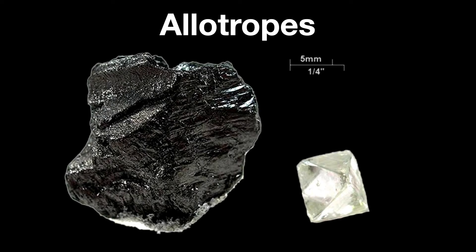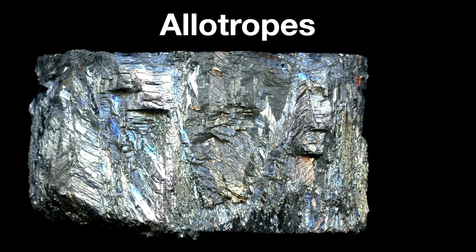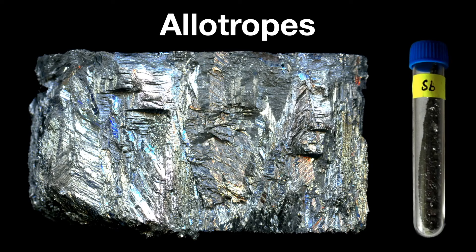Antimony has four allotropes. Allotropes are two or more different physical forms in which an element can exist at room temperature, like graphite and diamond for the element carbon. Only one of these antimony allotropes is common, the silvery metal I showed you at the top of the program. The others are not stable. One is called black antimony. Another is called yellow antimony. And the last is explosive antimony. The last two are rare enough that I couldn't even find photos of them.